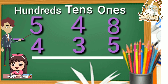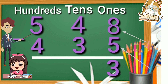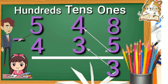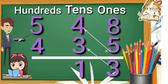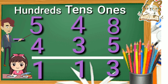First we subtract ones: eight minus five is equal to three. Then we subtract tens: four minus three is equal to one. Last we subtract hundreds: five minus four is equal to one.